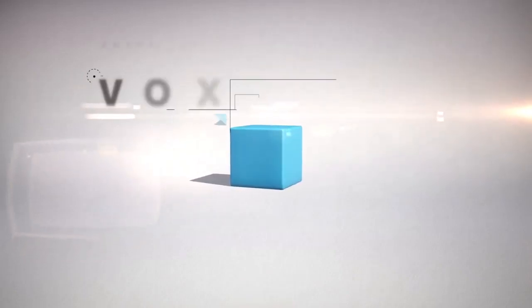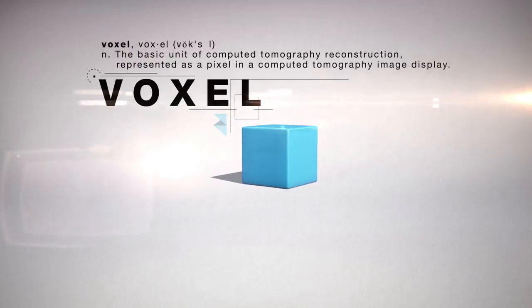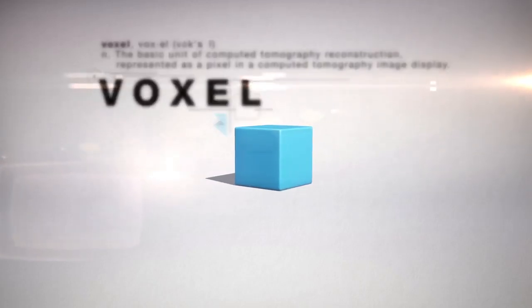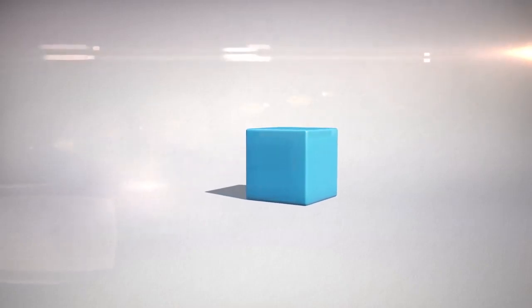If we were to take one of these pixels and extrude it in 3D, we would have a volumetric pixel, better known as the voxel. Voxels can have specific color properties similar to pixels, but also can be given specific material properties as they are tangible objects.